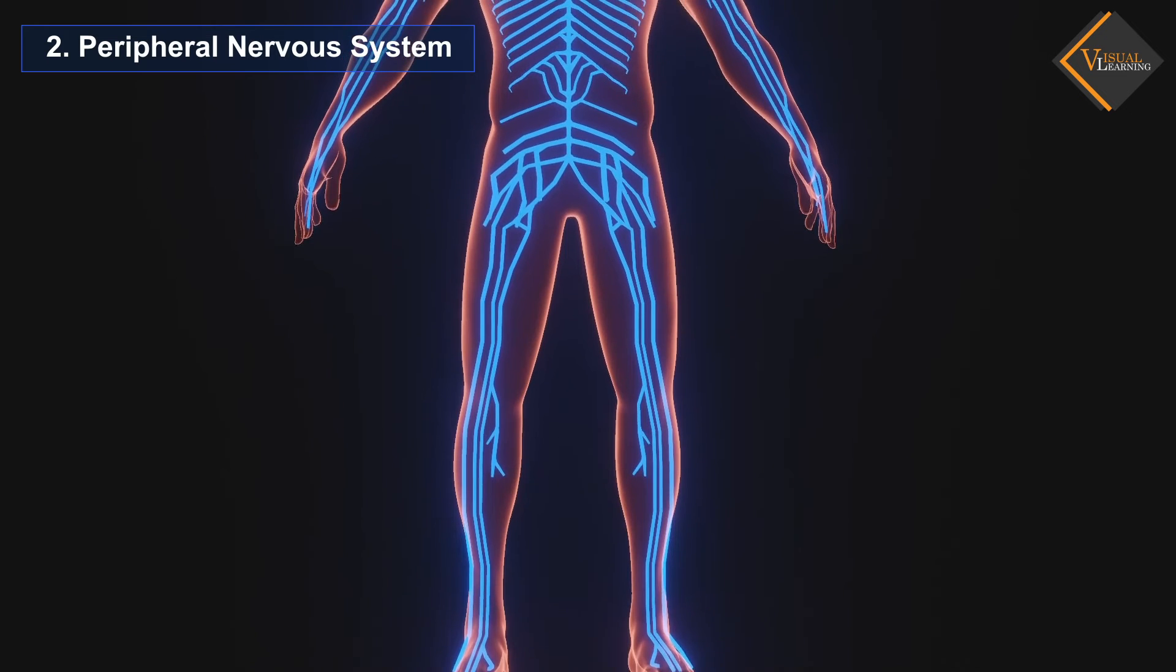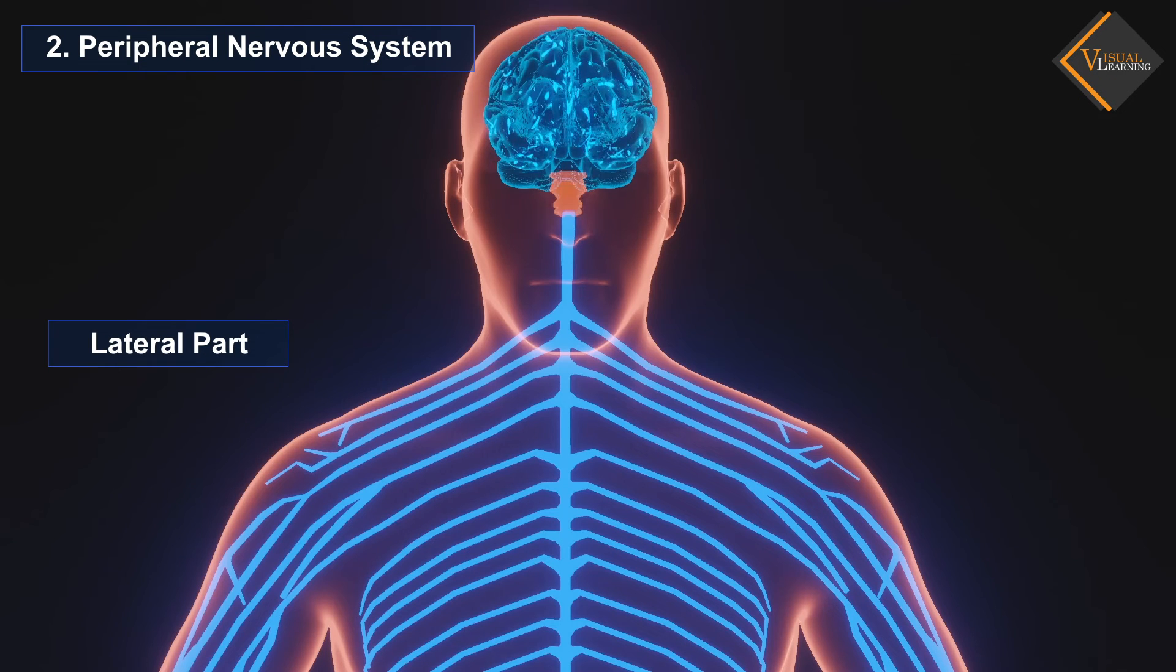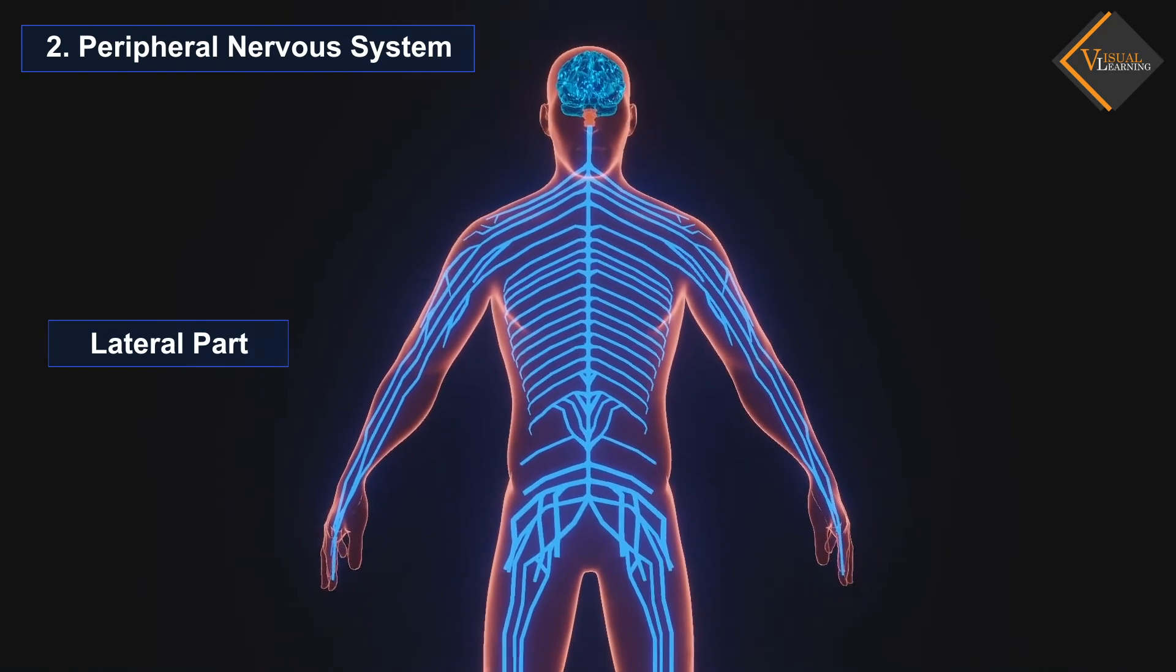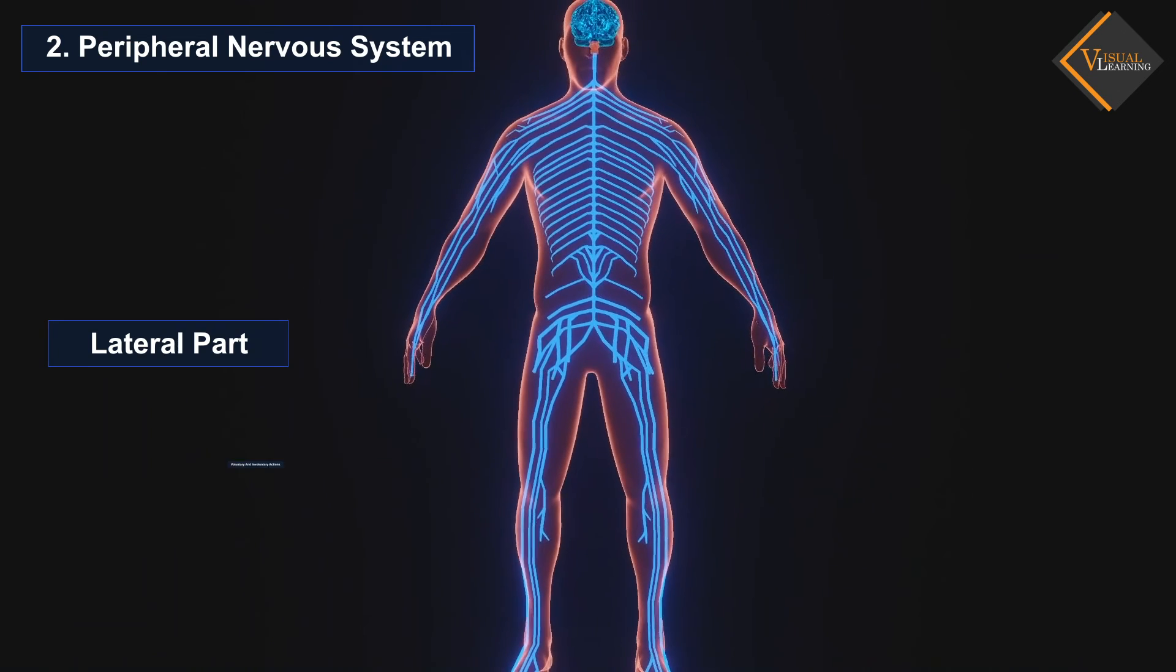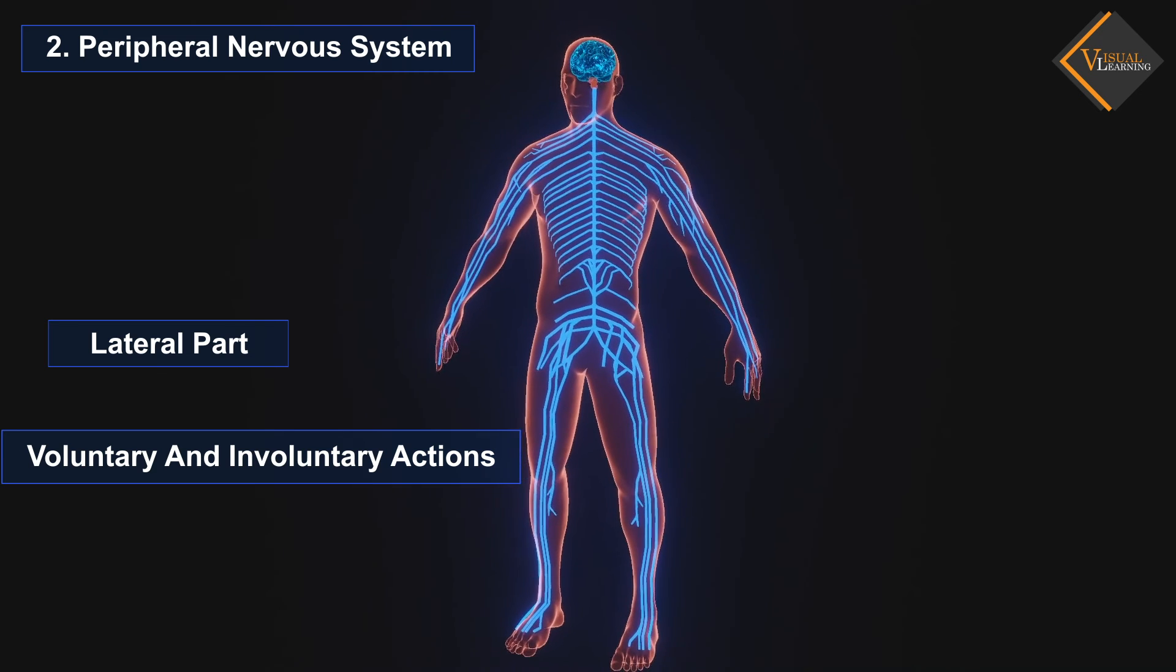The peripheral nervous system is the lateral part of the nervous system that develops from the central nervous system, connecting different parts of the body with the central nervous system. We carry out both voluntary and involuntary actions with the help of peripheral nerves.